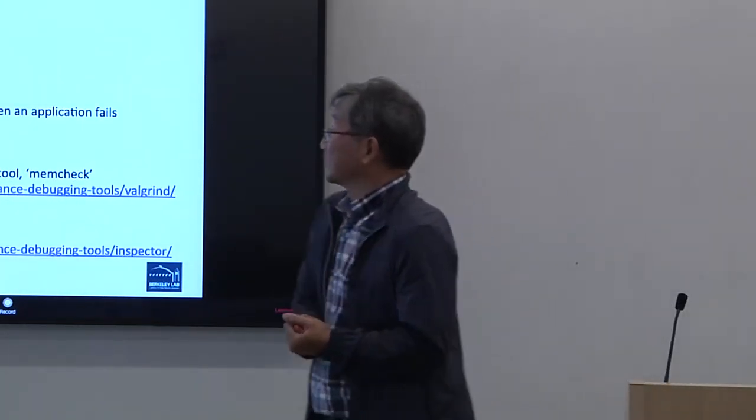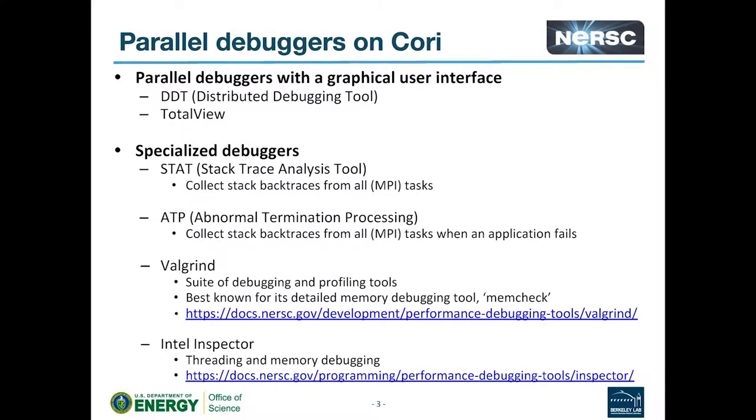So we have several kinds of debugging tools here. The first kind is the more traditional parallel graphical GUI-based debugging tools called DDT and TotalView. Most people are using DDT, but they are kind of complementary. Sometimes DDT misses certain things, and in that case you can use TotalView to find the bug. So usually DDT is more intuitive, so I would suggest you use DDT, but sometimes it misses a certain debugging situation. So in that case, we have to use TotalView.